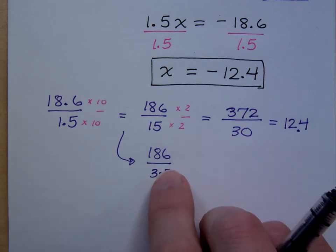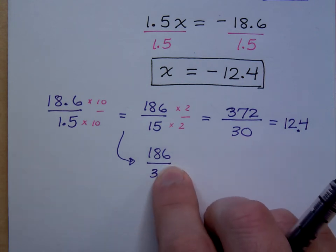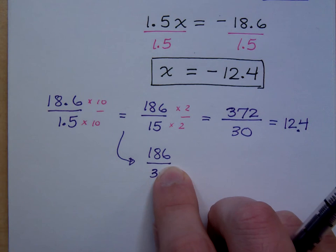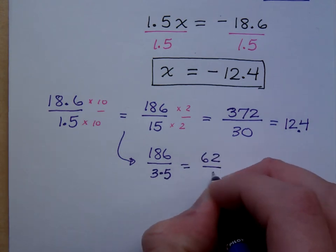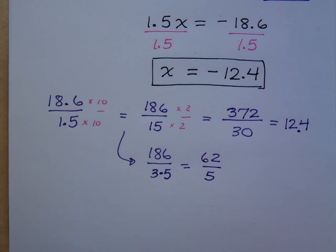Now I look at it this way: can you do 186 divided by 3? Because 3 goes into 18, 6 times and 3 goes into 6 twice. So this is really 62 divided by 5. You know a neat way to divide it by 5? Multiply times 2. Did you know that to divide it by 5 you multiply times 2?